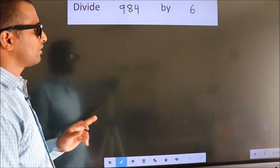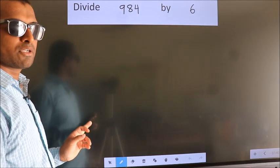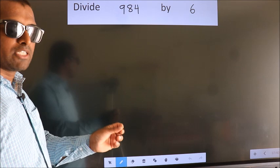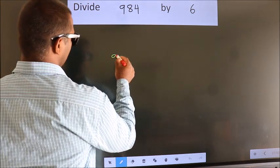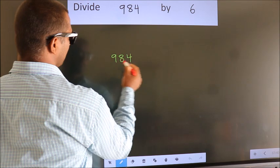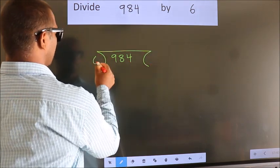Divide 984 by 6. To do this division, we should frame it in this way. 984 here, 6 here.